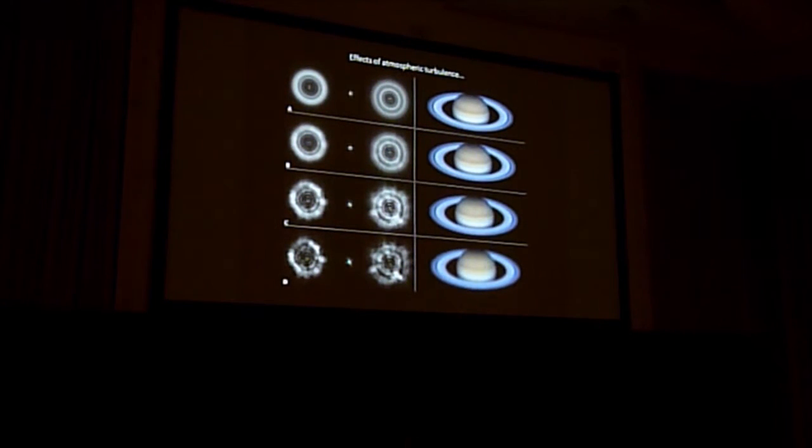The biggest effect of all on taking these kind of images isn't really the effects of the telescope aperture or obstruction, it's the atmosphere above our head. You can see here the effects of atmospheric turbulence imparted in the images. At top, with no turbulence at all, gradually small amounts of turbulence being added.